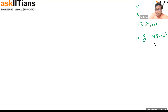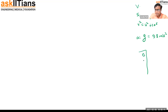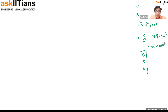Whenever we solve kinematic equations, directions and signs are important. Now consider a building. When a stone is released, we need to use sign conventions. We will say upward is positive and downward is negative.